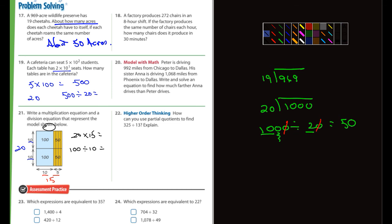Let's see here. How can I use partial quotients to find 325 divided by 13? How about 20 times 13? That's going to be 260. And then 5 times 13. That's going to be 65. And so if you add those up, what do you end up with? 325. All right. That's it.